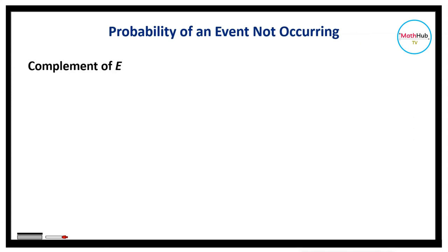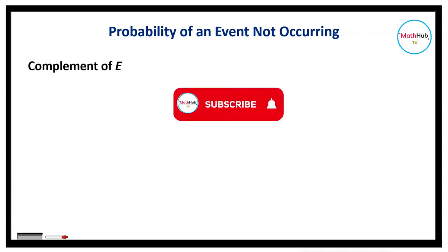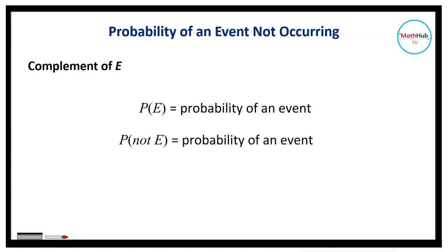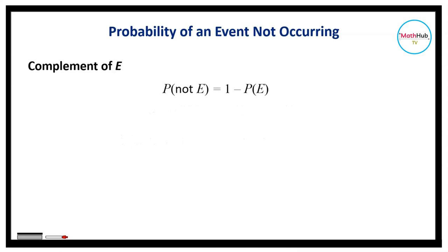Let's discuss the probability of an event not occurring, or the probability of the complement of E. If we know P of E, the probability of an event E, then we can determine the probability that the event will not occur, denoted by P of not E. The probability that an event E will not occur is equal to 1 minus the probability that it will occur. So P of not E is equal to 1 minus P of E.